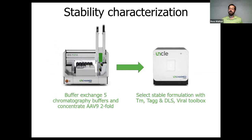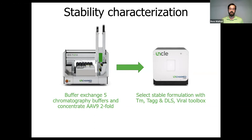To show what a stability study might look like using Big Tuna and UNCLE, we did buffer exchange of a sample of AAV9 into five different buffers in Big Tuna and then concentrated it two-fold. We took those samples and looked at them in two different applications on UNCLE: the TM-TAG with DLS application, which lets us look at intrinsic fluorescence, and the viral toolbox, which lets us look at genome ejection. Both applications let you look at aggregation with DLS or SLS depending on your needs.